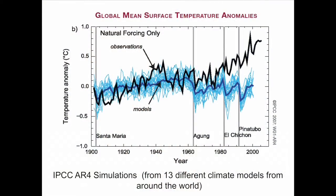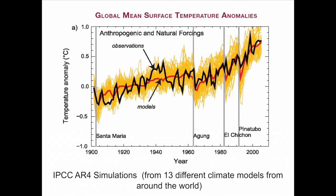This is the global mean surface temperature anomalies. It shows what happens if you only put in models that don't include man — natural forcing only — and what happens if you do include man. The actual observations are in black. The blue lines are the various models with only natural forces, and they don't work. But when you put in what we call anthropogenic — what human beings on this earth do — then you really do seem to fit what we're observing. Events like Mount Pinatubo affect the atmosphere, but by and large we have global warming, and almost all scientists agree man is playing an important role.